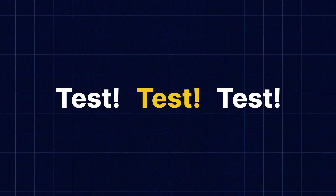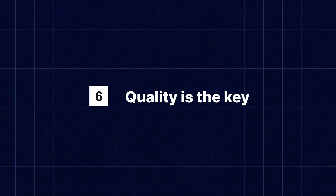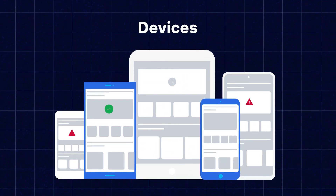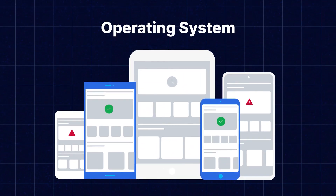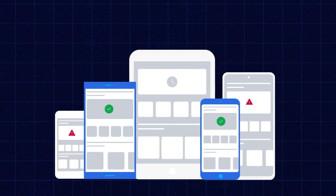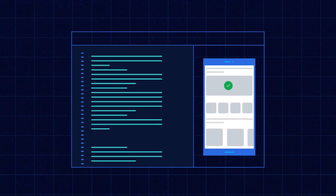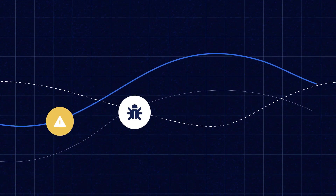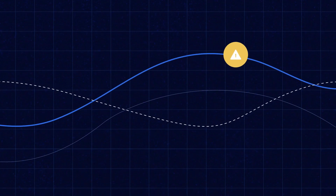Step six: Test, test, test — because quality is the key. Before launching your mobile app, thorough testing is crucial. Test your app on various devices, screen sizes, and operating systems to ensure it functions smoothly and provides a consistent experience to your customers. Address any bugs or issues encountered during the testing phase.